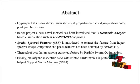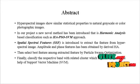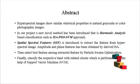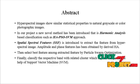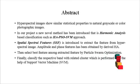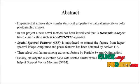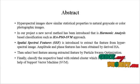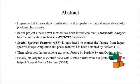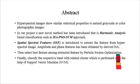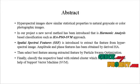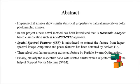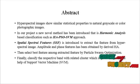The spatial spectral features (SSF) are introduced to extract features from the hyperspectral images from the corresponding selected band. Amplitude and phase features are obtained using high GA harmonic analysis. The best features are then selected from the extracted features using Particle Swarm Optimization. Finally, classification of the region of interest is performed using the Support Vector Machine.